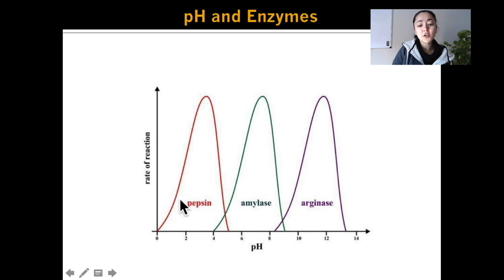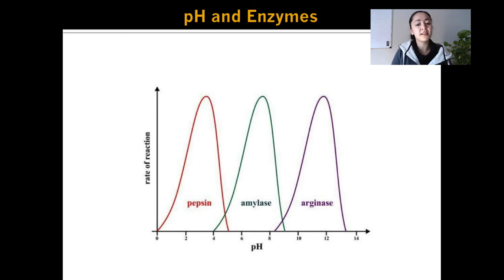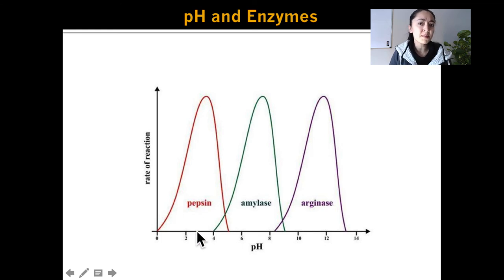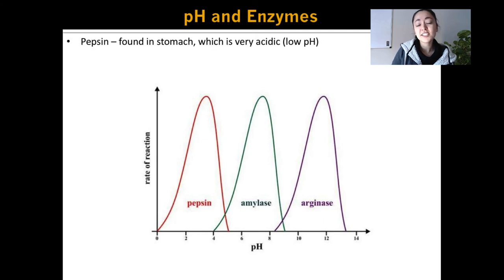Here is a graph showing three different enzymes found in the human body. Pepsin is an enzyme that breaks down proteins into their smaller building blocks or peptides. Pepsin has an optimum pH around 3, so it works best in a very acidic environment. Where do you think pepsin is found in our body? It's actually found in the stomach, which has a very low pH and is very acidic.